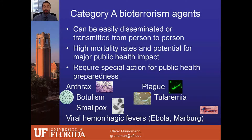Based on their high risk for causing potential harm to the public, they require special action in terms of public health preparedness. Within the category A agents we will find anthrax, the plague, botulism, tularemia, smallpox, and viral hemorrhagic fevers.